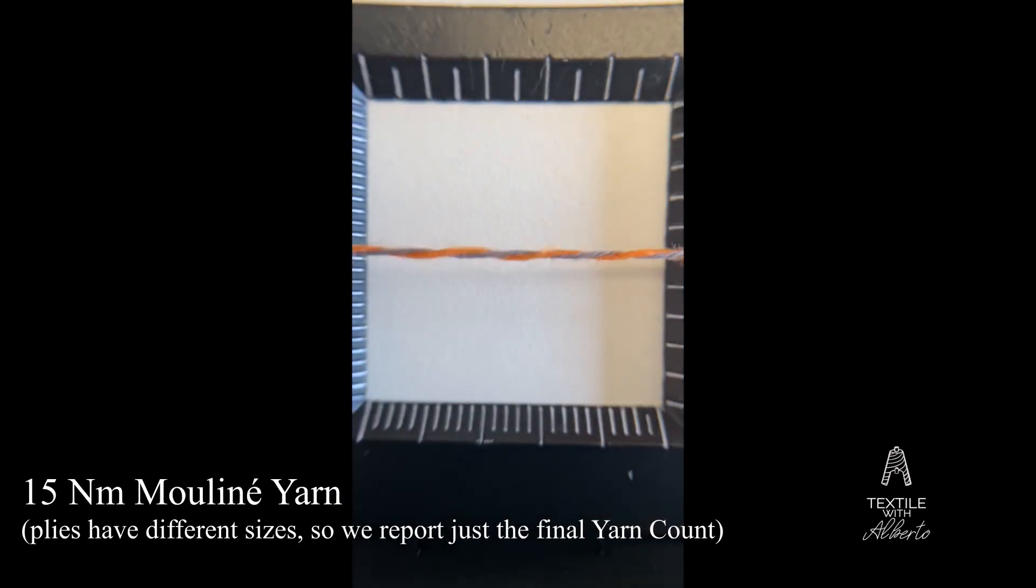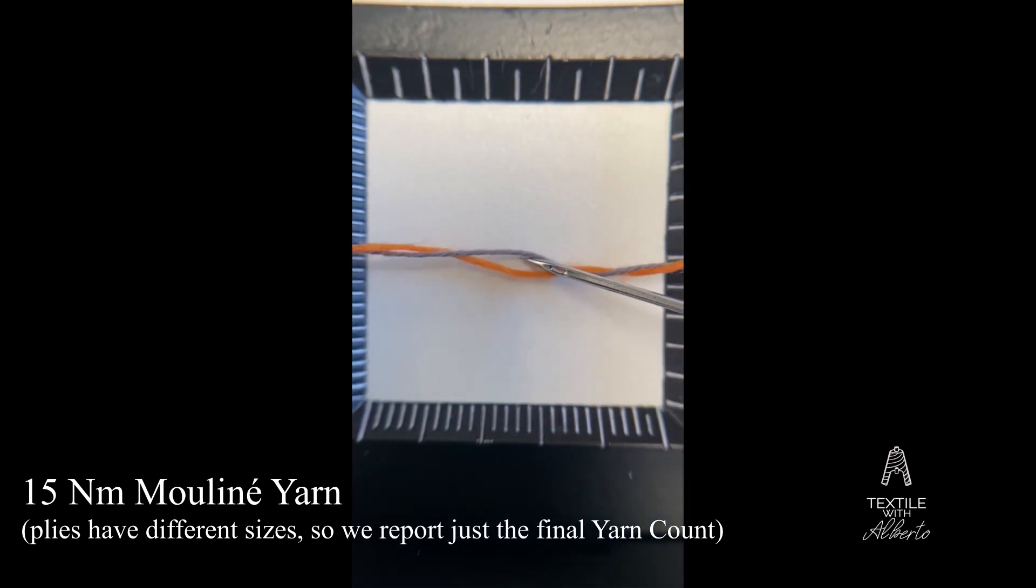Also here, regarding moulinée yarns, as you can see moulinée yarns are practically two yarns of different colors twisted together to give this wonderful visual effect.